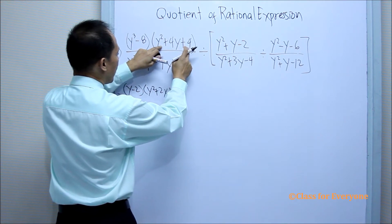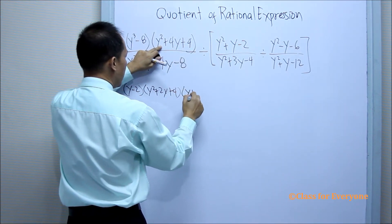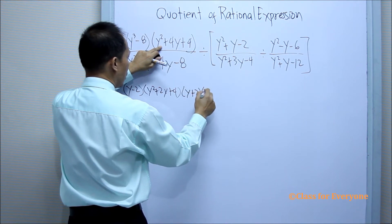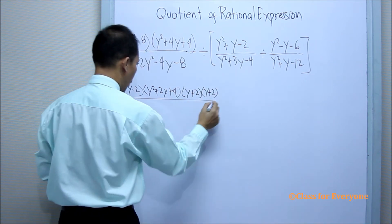This is a perfect square trinomial. So we can factor it as y plus 2 times y plus 2 all over.